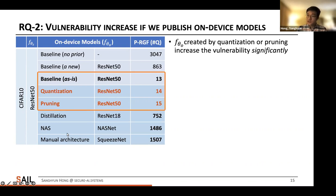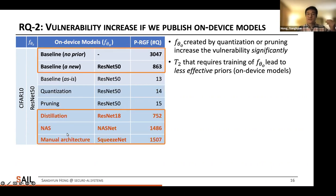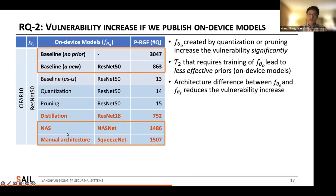Using on-device models as a prior, we show that models constructed by quantization and pruning cause the worst-case vulnerability increase — essentially the same as having the exact same model. We also show that if on-device model construction involves training from scratch, like distillation, the vulnerability is slightly higher than using a model trained from scratch independently. If the on-device model uses a different architecture, the attacker still reduces the number of queries by half compared to the no-prior case.